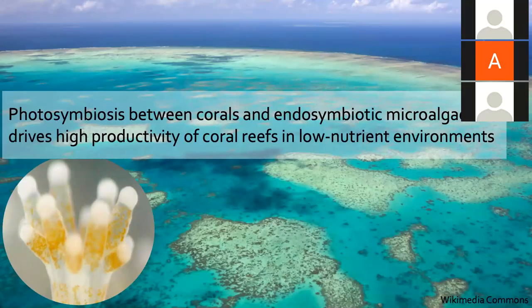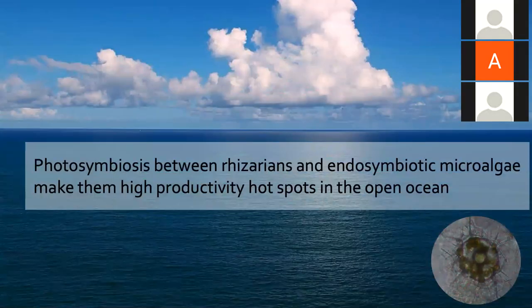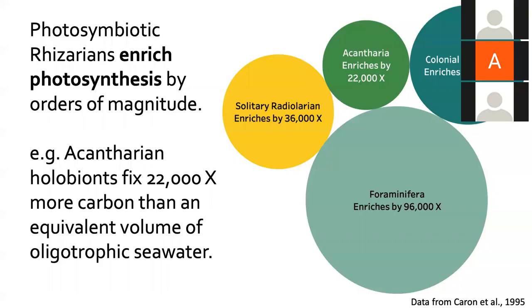Photosymbiosis is probably best known for the role it plays in coral reef ecosystems. Reef-building corals host endosymbiotic microalgae, allowing them to be very productive in low-nutrient regions. Out in the open ocean, it's been shown that rhizarians can enrich photosynthesis in oligotrophic waters by several orders of magnitude. For example, a single acantharian could fix 22,000 times more carbon than an equivalent volume of oligotrophic seawater.